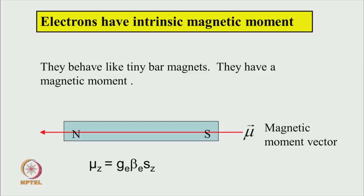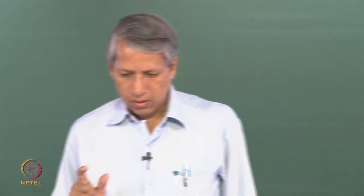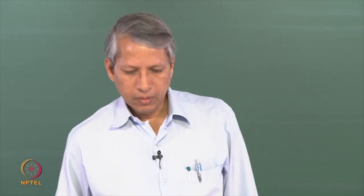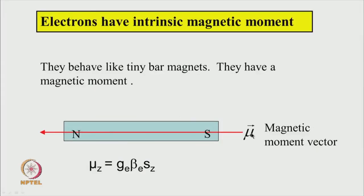So, the electron therefore has an intrinsic magnetic moment — they behave like a tiny bar magnet. A bar magnet has a magnetic moment given by mu, and its direction goes from south to north; this is a vector quantity.